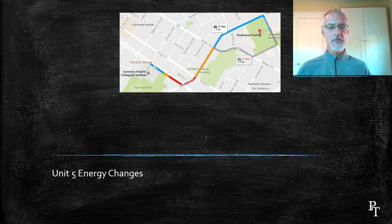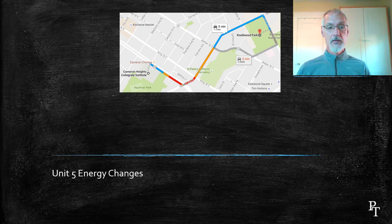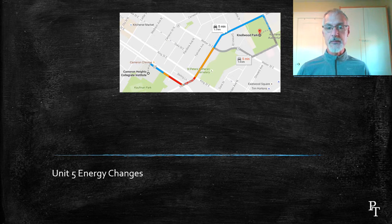Here I have a map. This map shows the route to go from Cameron Heights Collegiate to Knollwood Park. Both routes have exactly the same starting place and finishing place. Both of them have exactly the same change in time, but one is a different length.